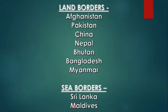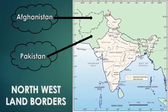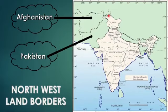Now let us see in which direction these countries are. There are two border countries on the northwest of India. One is Afghanistan — this is the only border of Afghanistan with India. The second northwestern neighbor is Pakistan, whose border starts from here, and this whole part is the border line of India and Pakistan.